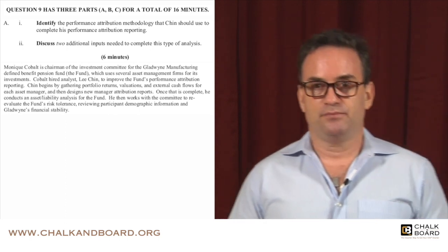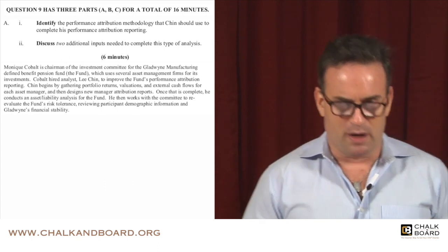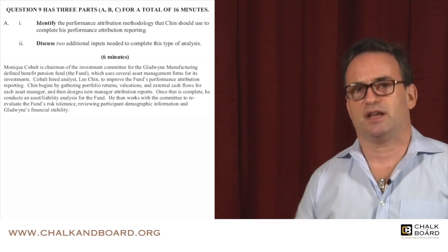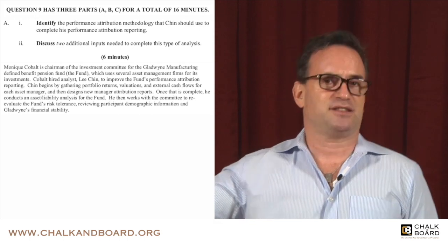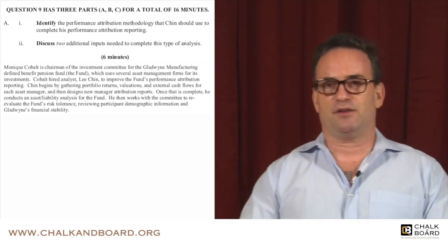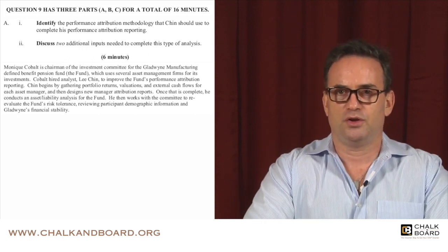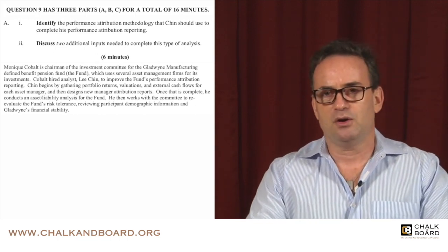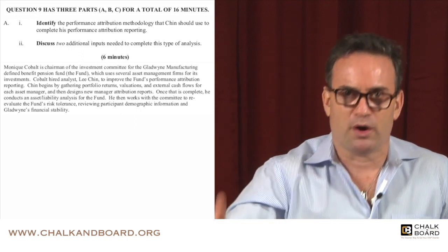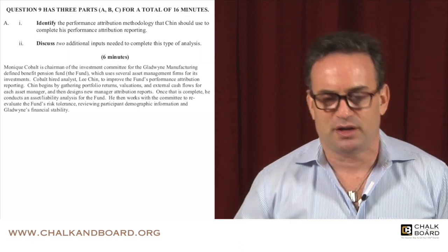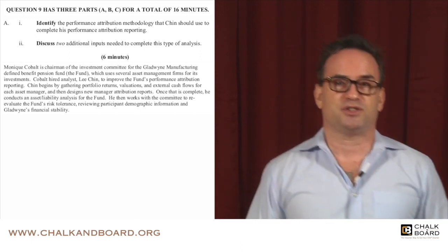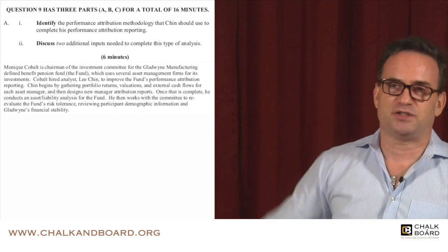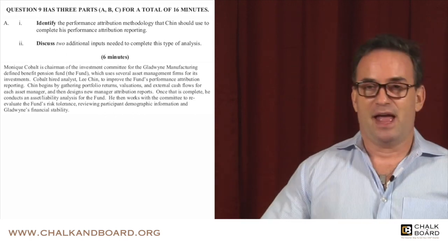The answer to number one — take a look at A1. 'Identify' is the keyword. When you're asked to identify, if I asked you to identify one person in the room, you'd just say 'Joe.' You wouldn't start telling me about Joe's shirt or sneakers or hair. Identify means almost a one-word answer. So the answer would simply be: macro attribution analysis approach. That's all you would say — macro attribution analysis — and that would satisfy A1.